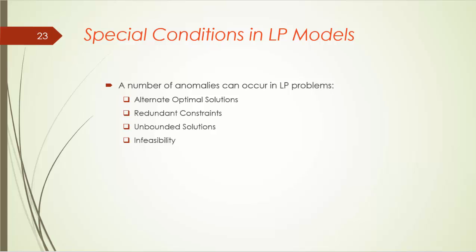Here, we'll introduce a few anomalies that can occur in LP problems. They are alternate or multiple optimal solutions, redundant constraints, unbounded solutions, and infeasibility. Let's take a look one at a time.